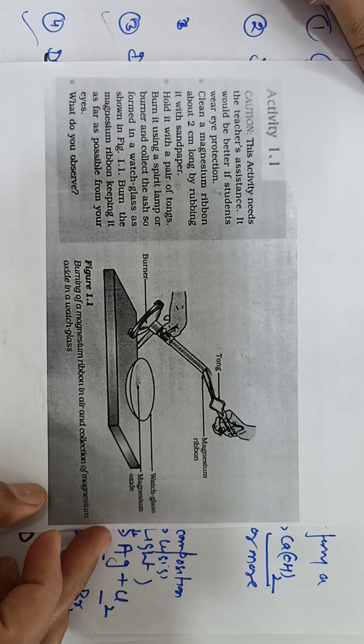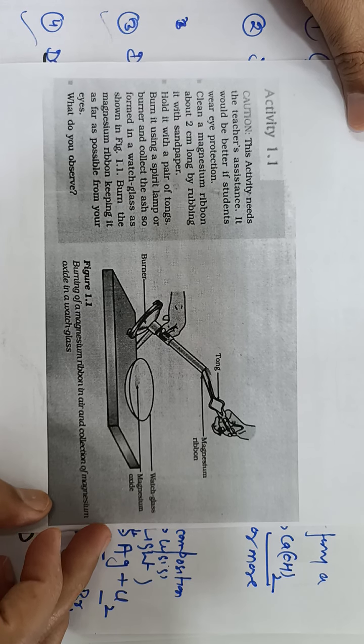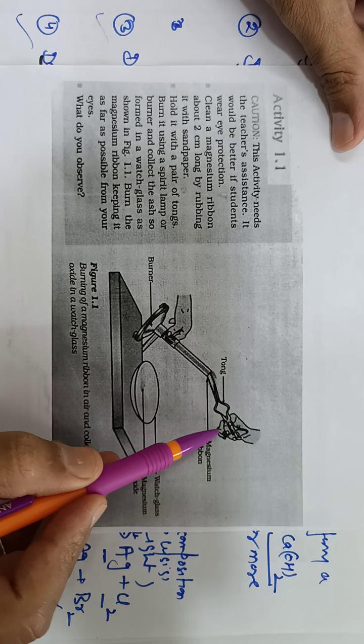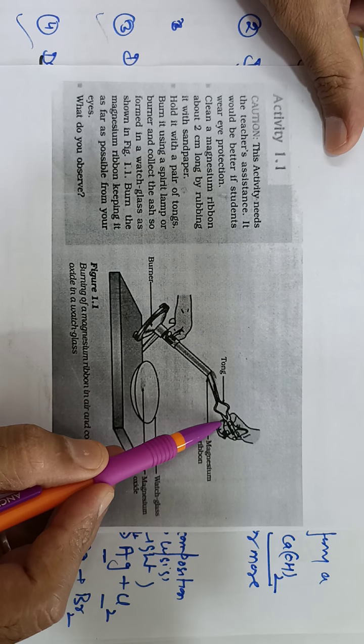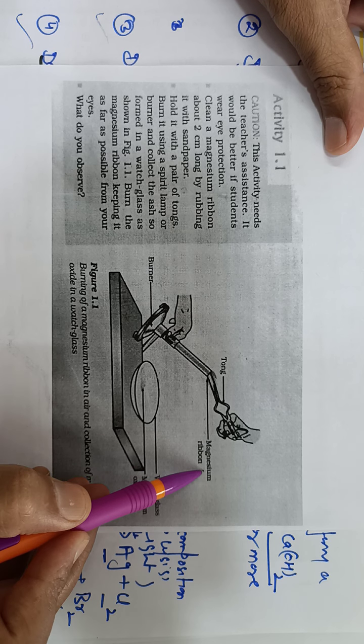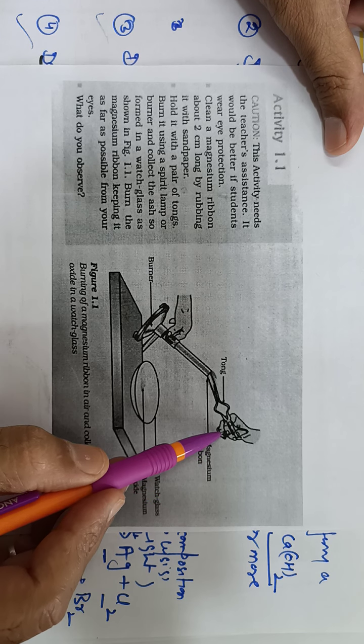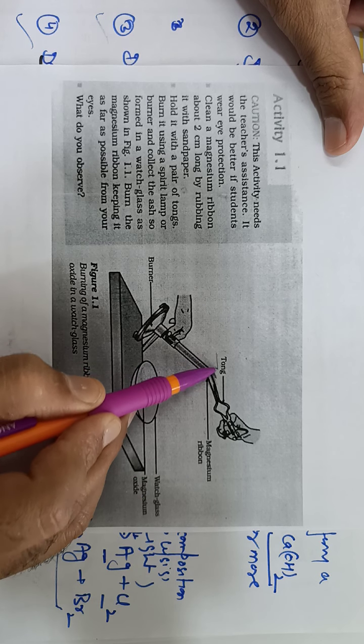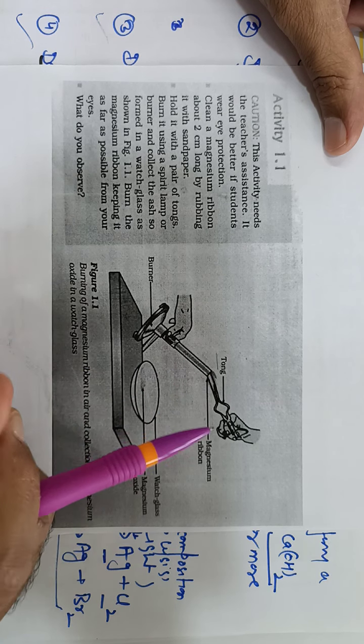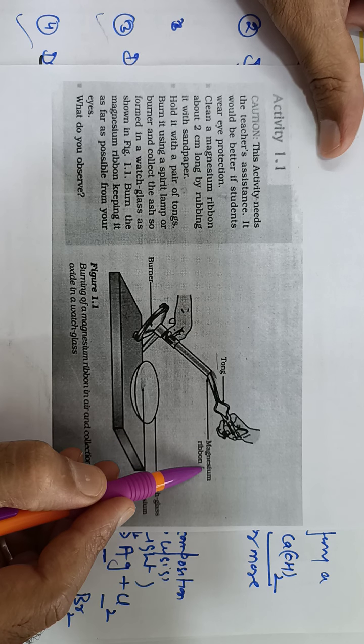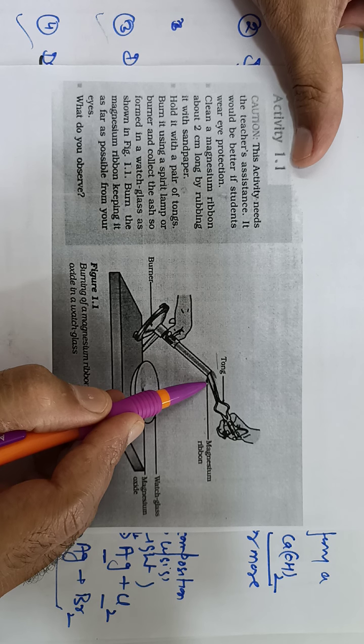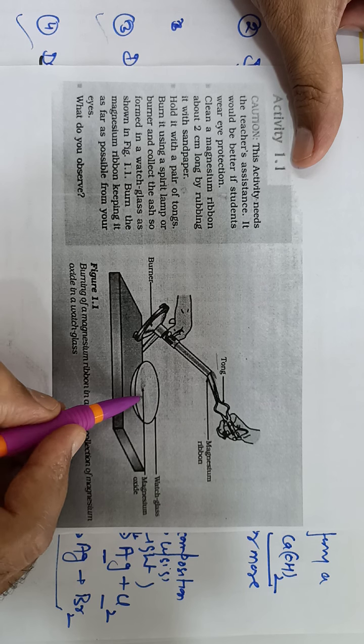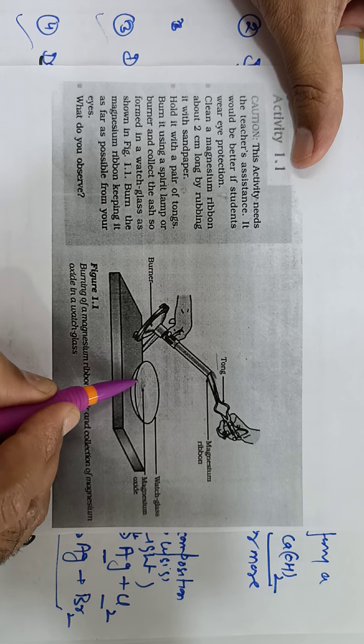In the last video we discussed combination reaction. Let us see the activity. Here you can see we are holding tongs with a magnesium ribbon. This is a tong holder to hold the magnesium ribbon and we are burning it. As we burn it, it burns in the presence of oxygen to form a white powder of magnesium oxide.